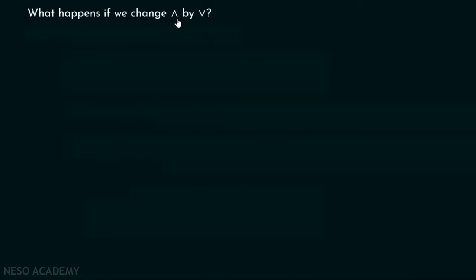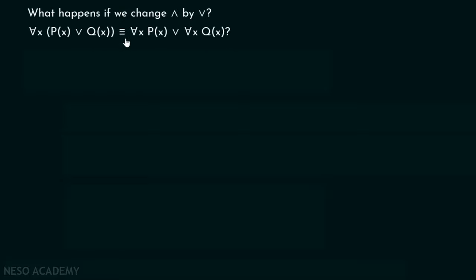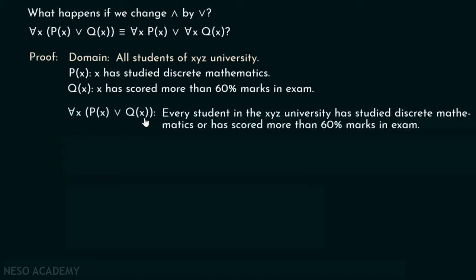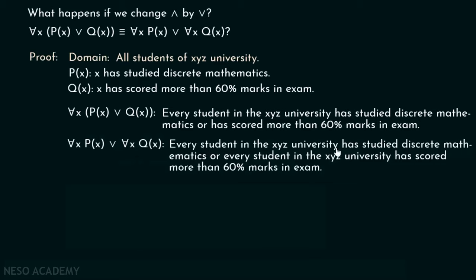Now let us consider what happens if we change AND to OR. Is for all x P(x) ∨ Q(x) equivalent to for all x P(x) or for all x Q(x)? Using the same domain and predicates, 'for all x P(x) ∨ Q(x)' means every student has studied discrete mathematics or scored more than 60 percent marks. The other statement means every student studied discrete mathematics, or every student scored more than 60 percent.